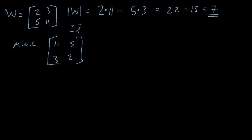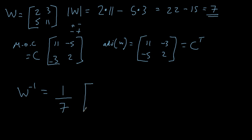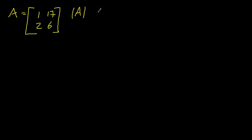Don't forget the sign pattern plus, minus, minus, plus — so the middle two elements have their signs changed. To find the adjugate of matrix W, the first row becomes the first column and the second row becomes the second column. The inverse of W — W to the minus one — is one seventh times the adjugate: eleven, minus three, minus five, two. That gives eleven over seven, minus three sevenths, minus five over seven, and two sevenths — no decimals needed.